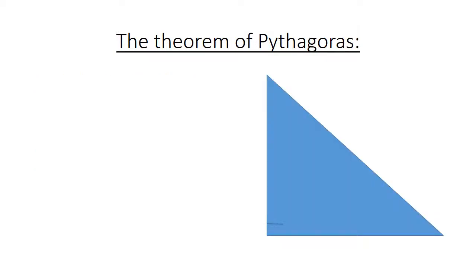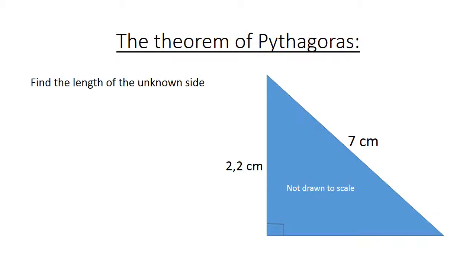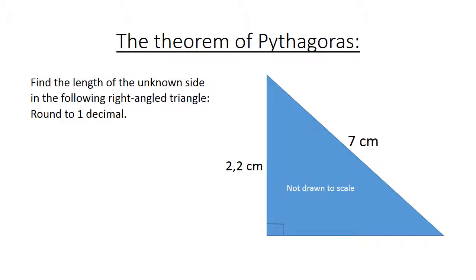Again we have a right angle triangle. One side is 2.31 centimeters and the longest side, the hypotenuse, is 7 centimeters. This is not drawn to scale. Find the length of the unknown side. Round to one decimal.